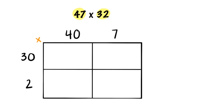Now, we can begin multiplying. We are going to start with 40 times 30. We know 4 times 3 is 12, and then we can just add the zeros from both of the numbers. In the next box, we need to multiply 7 times 30. We know 7 times 3 is 21, and then we can just add the zero from the 30.